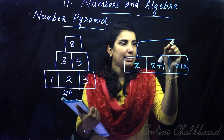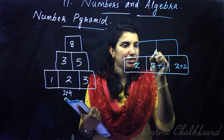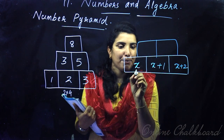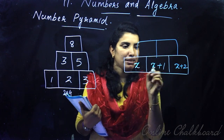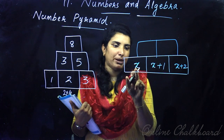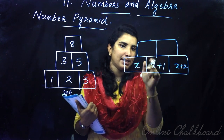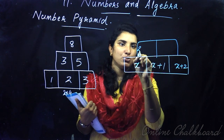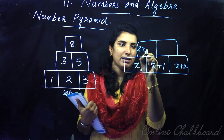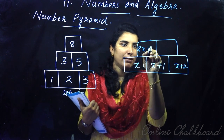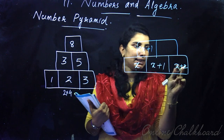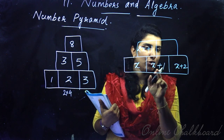Let's take a look at the desired base. To add x plus 1: 2x plus 1. Here are 2x plus 1.